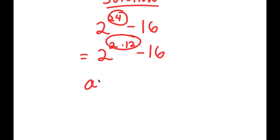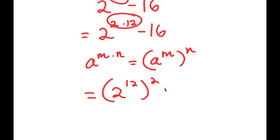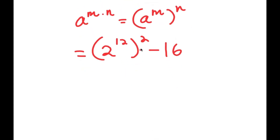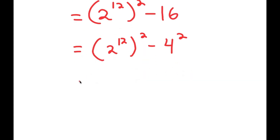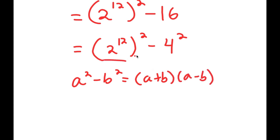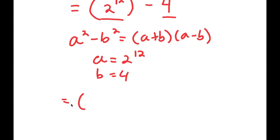Now, if I have something in the form a to the power of m times n, this is equal to a to the power of m to the power of n. So in this case, 2 to the power of 2 times 12 I can rewrite as 2 to the power of 12 to the power of 2, minus 16. And now I'm going to rewrite 16 as 4 squared. So I get 2 to the power of 12 to the power of 2 minus 4 squared. Using the difference of squares, a squared minus b squared equals a plus b times a minus b, where a is 2 to the power of 12 and b is 4. So I get 2 to the power of 12 plus 4, times 2 to the power of 12 minus 4.